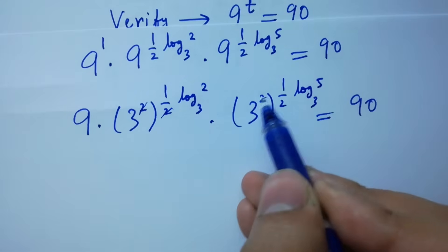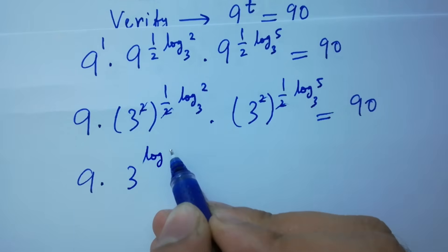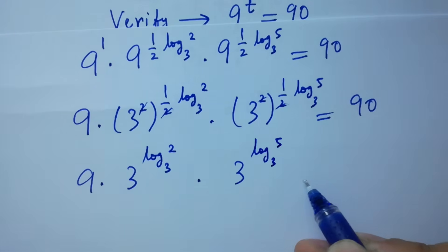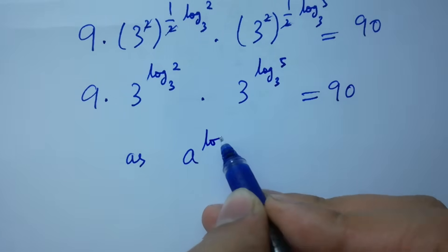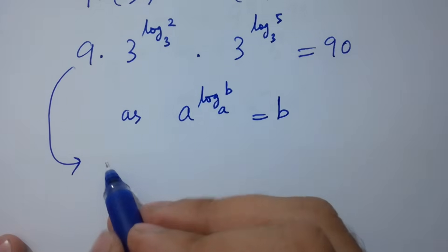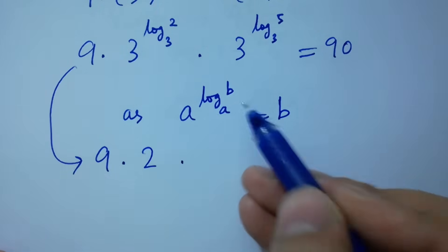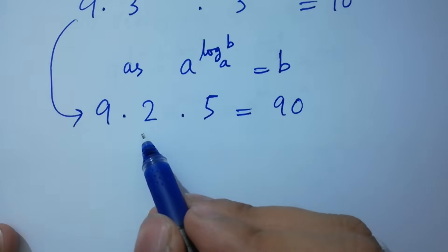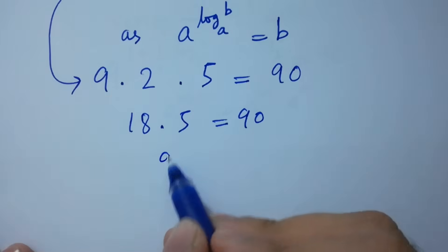The 2 and 2 cancel. So we get 9 times 3 to the power log 2 to the base 3 times 3 to the power log 5 to the base 3 equals 90. Using the identity a to the power log b to the base a equals b, we get 9 times 2 times 5 equals 90. Indeed, 18 times 5 is 90, which equals 90.